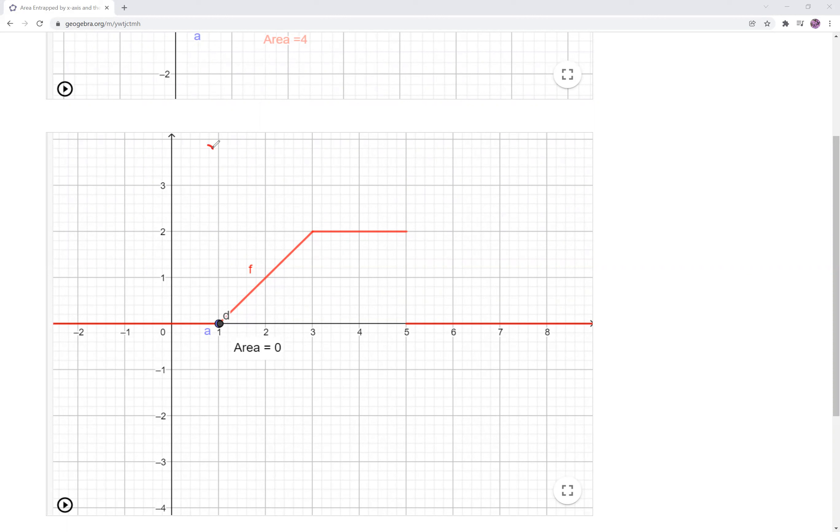So first thing first, let's find out what this function is. And here, the function is... look at this line. Anywhere outside the 1 and 5, the function is 0. X less than 1 or x bigger than or equal to 5.